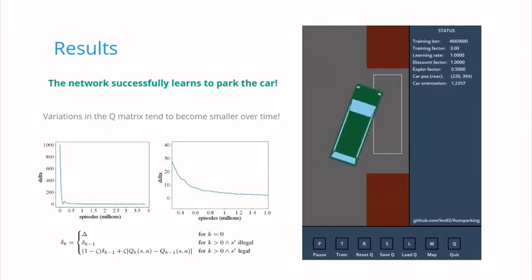The graph shows the magnitude of the variations of the Q matrix over time during the training phase. The curve decreases almost monotonically and tends to zero as the number of training episodes grow.